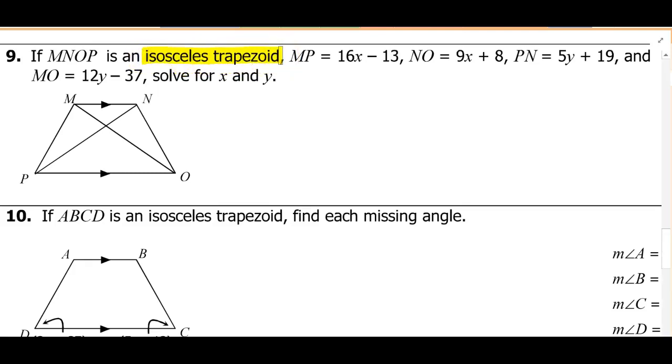Okay, we've got that MNOP is an isosceles trapezoid, and we're given that MP is 16x minus 13. So let's go ahead and mark that on our picture. 16x minus 13. And we have that NO is 9x plus 8. So this side here is 9x plus 8.